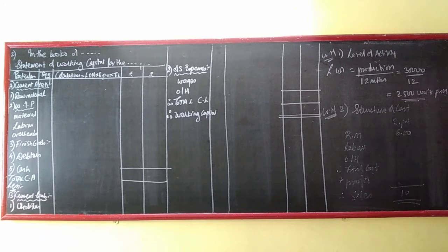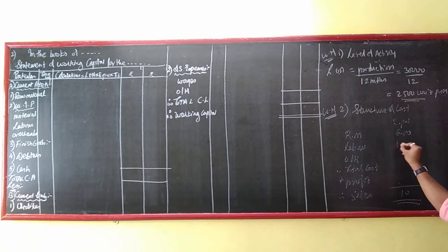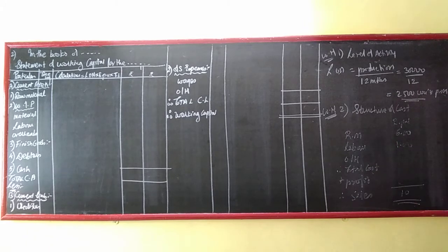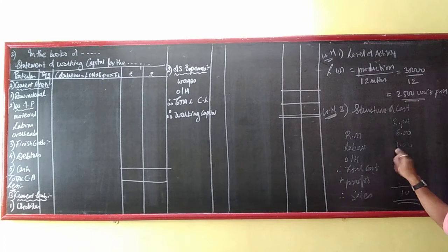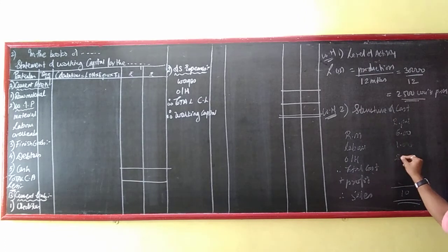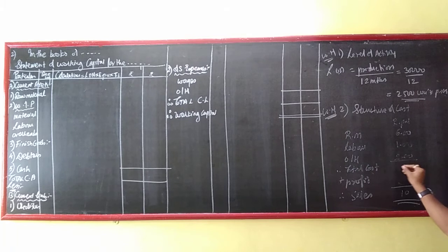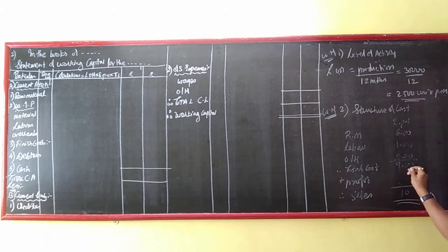Wages are 1/6th of material, so 6 divided by 6 equals 1. Overheads are twice the wages, so 1 × 2 equals 2. That means total cost is 6 + 1 + 2 = 9 rupees.